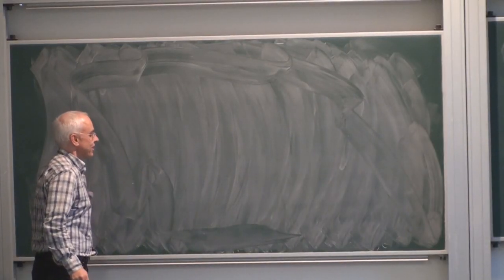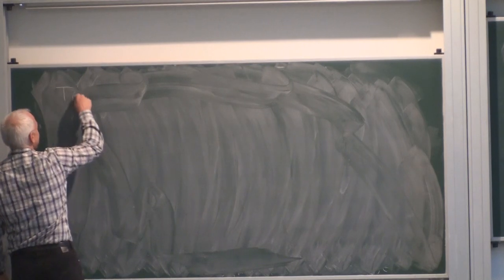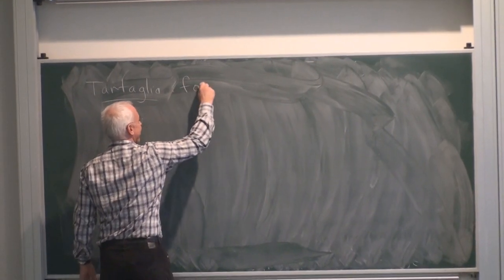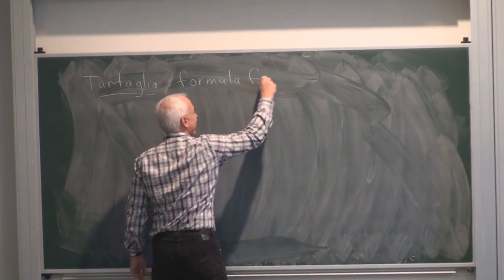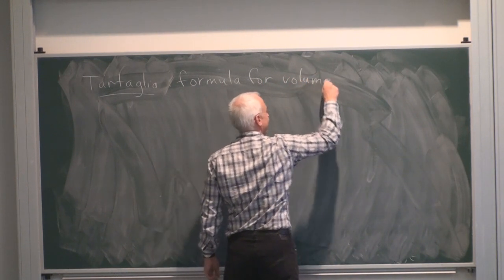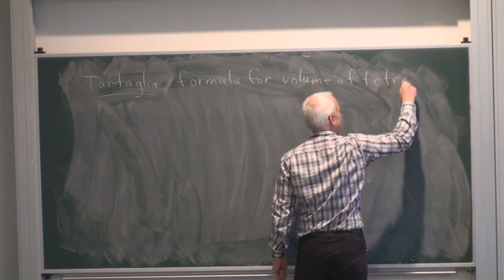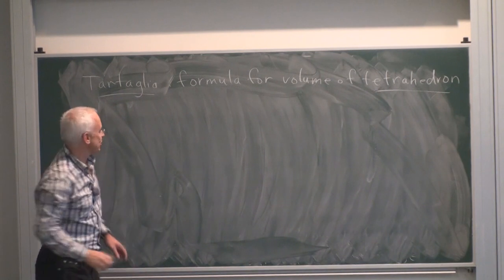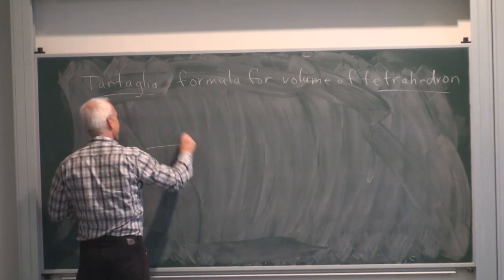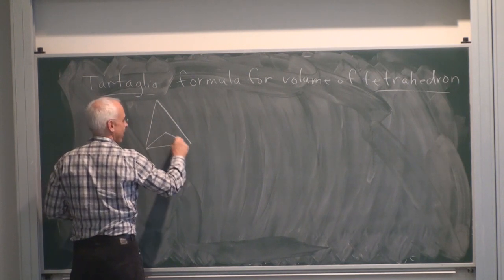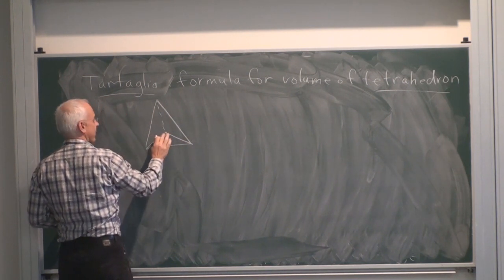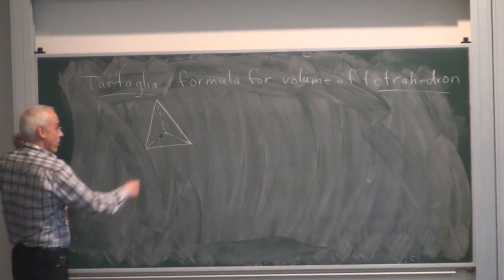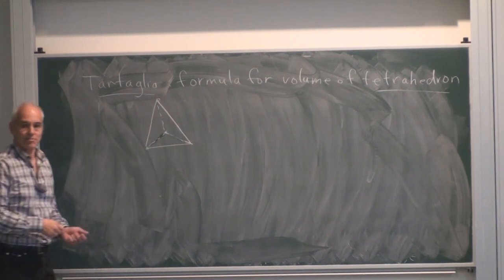Let's have another look at Tartaglia. He also proved a lovely formula for the volume of a tetrahedron. The tetrahedron has four points in space making six sides.